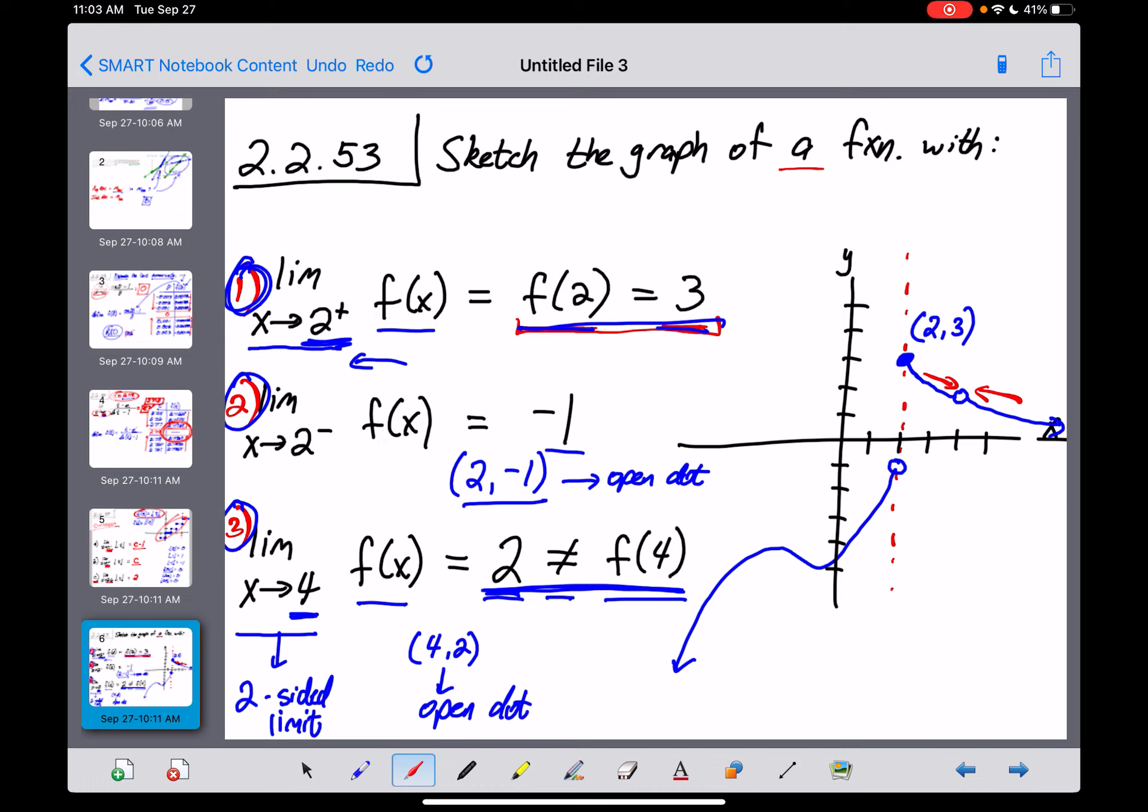Now the last thing you could deal with, this statement right here, f of 4 cannot equal 2. Because I have an open dot right here at the point (4, 2), and I suppose I could label that, because I have an open dot, I'm actually okay with this statement right here. f of 4 is not equal to 2.